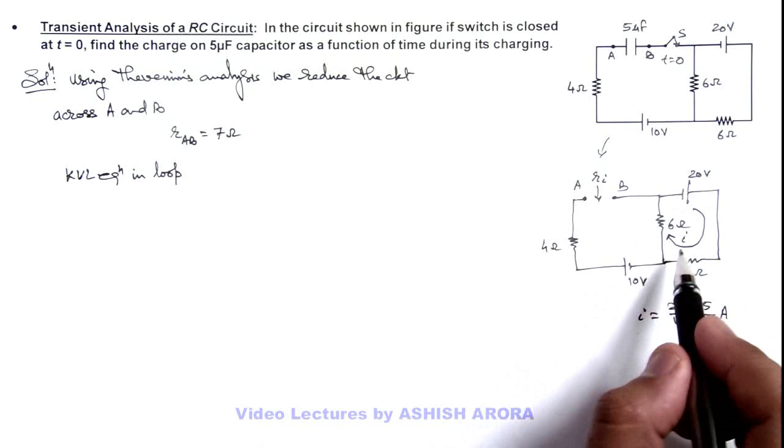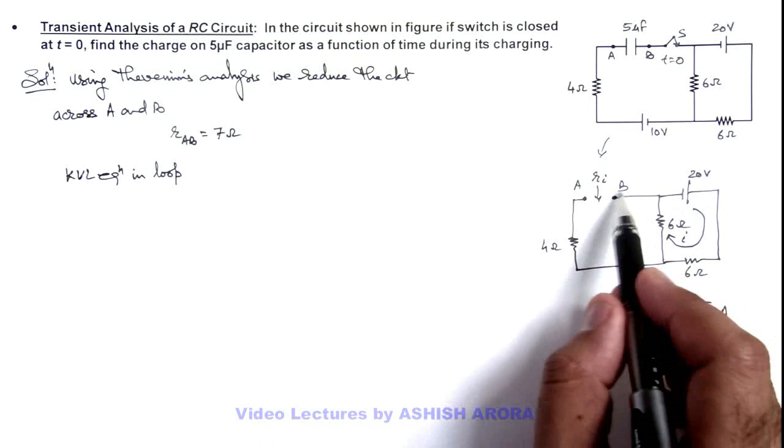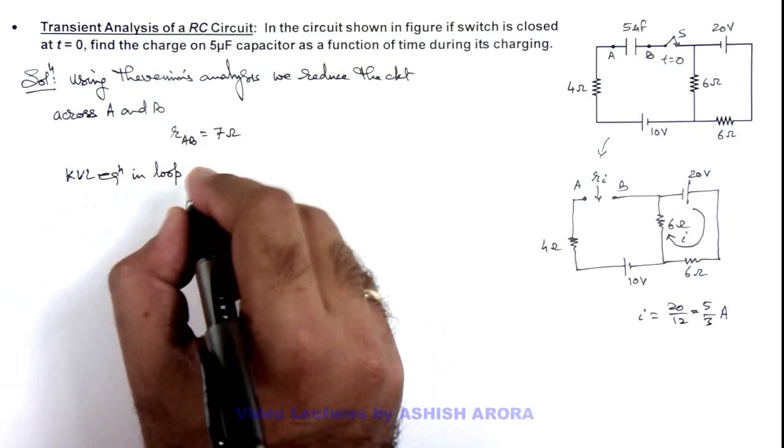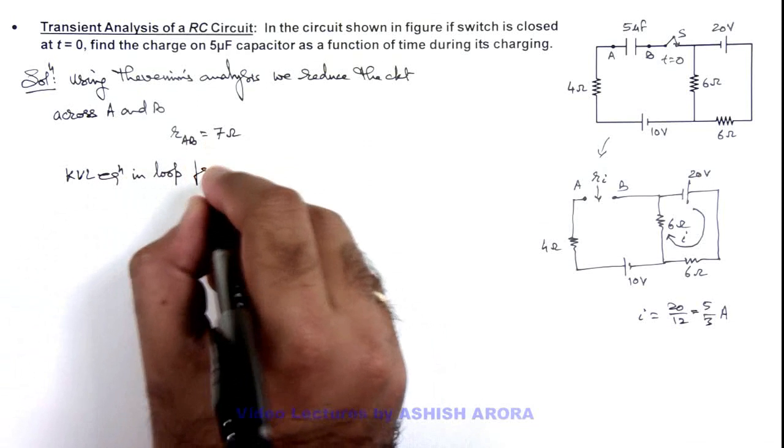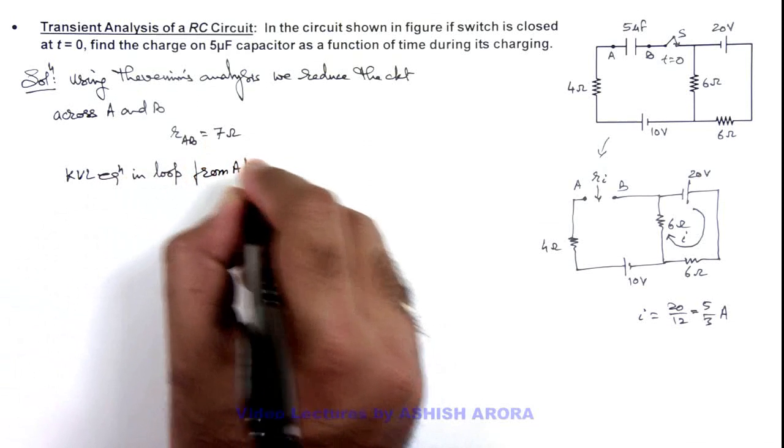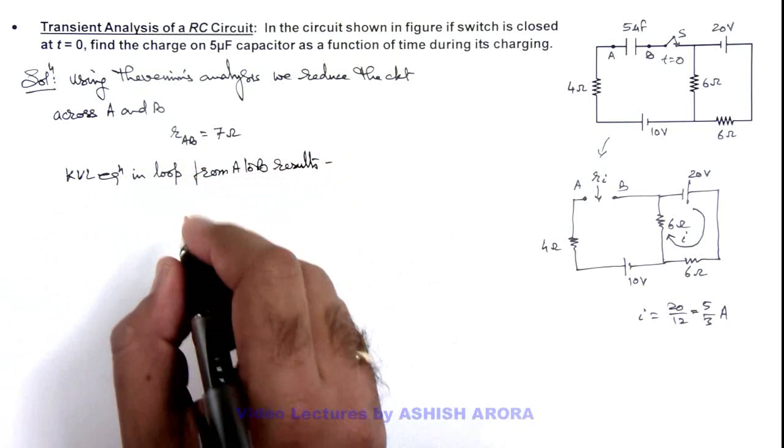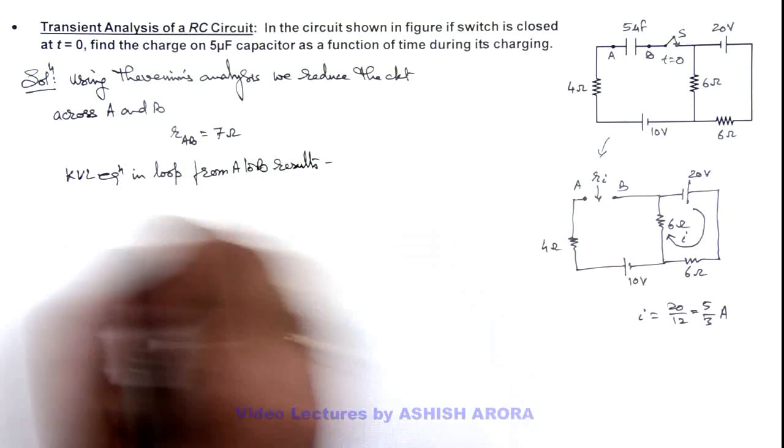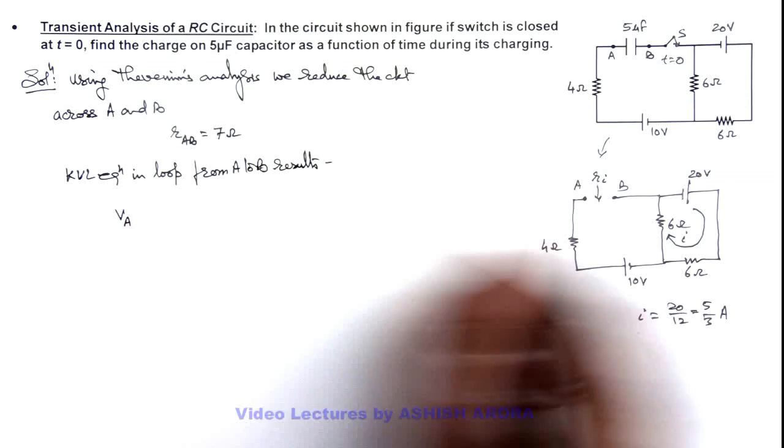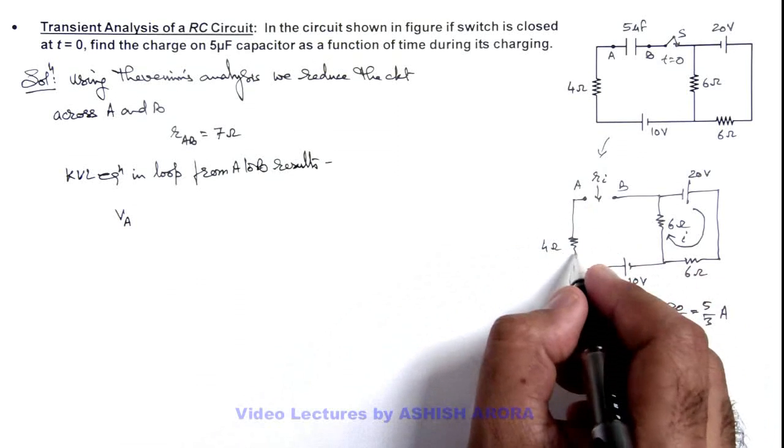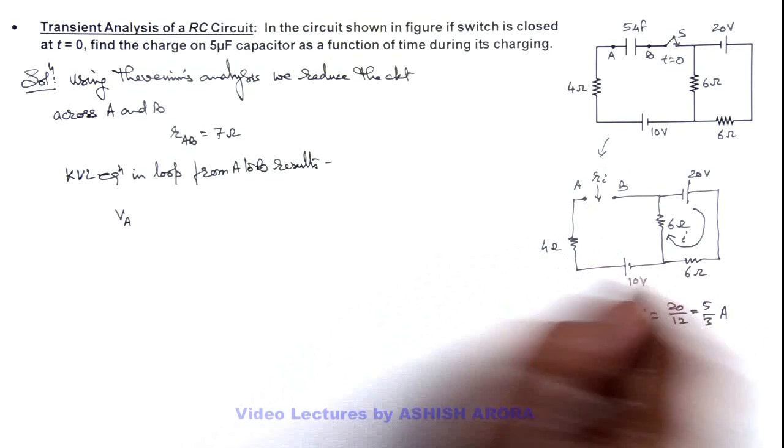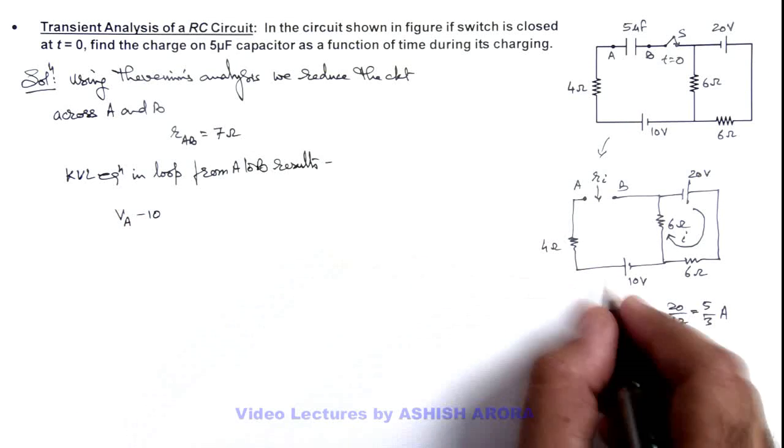And in this loop, if we write KVL equation to calculate B to A, from A to B, if we start from point A it is V_A. Then no current is flowing, so no potential drop is here. This will be minus 10.